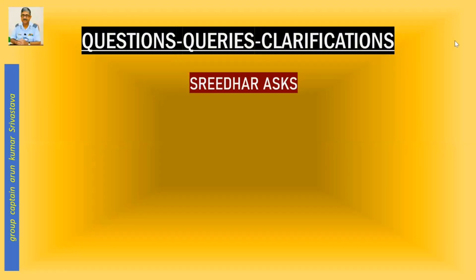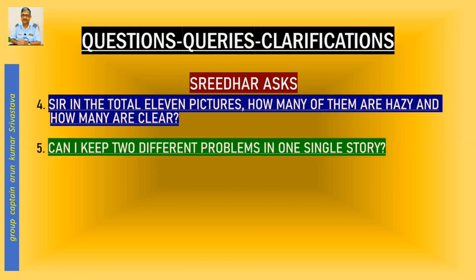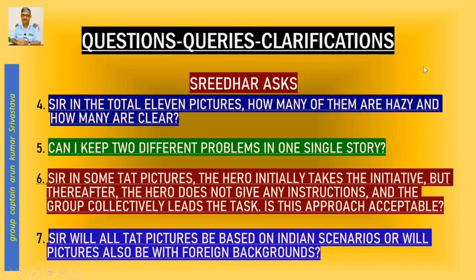Sridhar has asked further questions: in the total 11 pictures, how many are hazy and how many are clear? Can I keep two different problems in one single story? In some TAT pictures, the hero initially takes the initiative but thereafter the hero does not give any instruction and the group collectively leads the task — is this approach okay? And one of the final questions: will all TAT pictures be based on an Indian scenario, or will pictures also be on a foreign background? These are very important questions, and I'll get connected with Sridhar subsequently to address them.